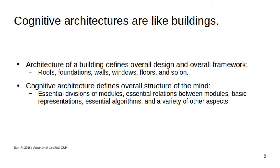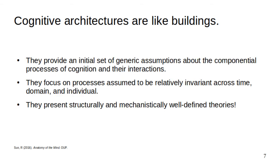We can begin to unpack this definition with an analogy. Just like the architecture of a building defines the overall design and framework of that building, a cognitive architecture defines the overall structure of the mind. More specifically, cognitive architectures provide an initial set of generic assumptions about the componential processes of cognition and their interaction. The processes that are targeted are usually assumed to be relatively invariant across time, domain, and individual.